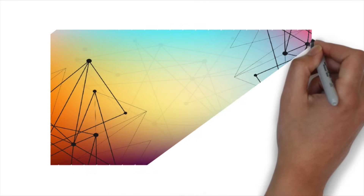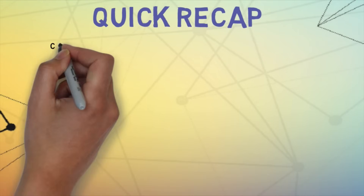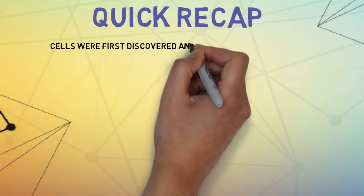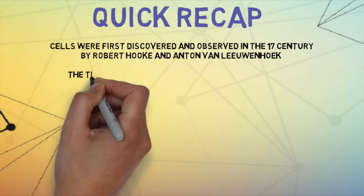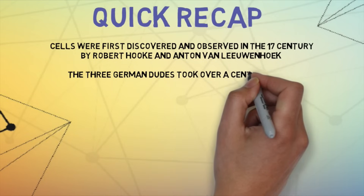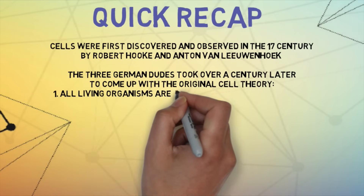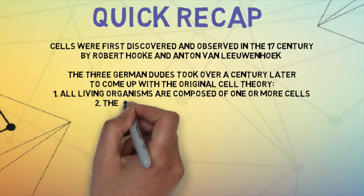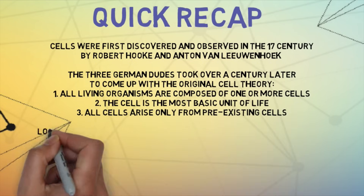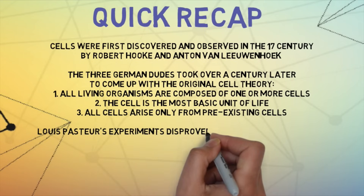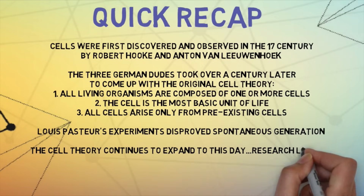I hope you guys have a much better understanding of why the cell theory was so important and where it originated. It truly revolutionized the way the world thought about life and paved the way for so much more scientific research that continues to this day. To recap: cells were first discovered in the 17th century by Robert Hooke and Anton von Leeuwenhoek, and their work paved the way for the cell theory to emerge in the mid-1800s. The last component of the cell theory was very controversial because it went against the belief in spontaneous generation, and Louis Pasteur helped prove it with his experiments. The cell theory is continuing to evolve, and that's the cool thing about science — we're always moving forward and advancing for the benefit of humanity. Thanks for watching, and we'll see you next time on STEM Stream.